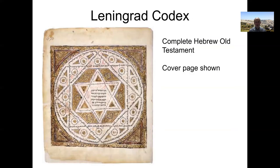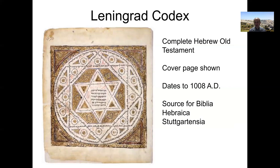This is a picture of the cover of the Leningrad Codex. It's the oldest complete Hebrew Old Testament. It dates to about 1008 AD, so it's a little over a thousand years old now. It's the source for the Biblia Hebraica Stuttgartensia. So if you buy one of those books on the Hebrew Bible on the internet, what you're getting is essentially a transcribed copy of the Leningrad Codex, which is over a thousand years old.